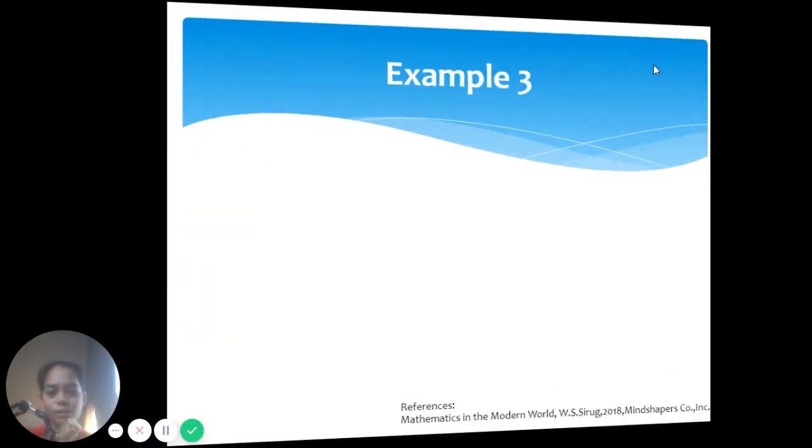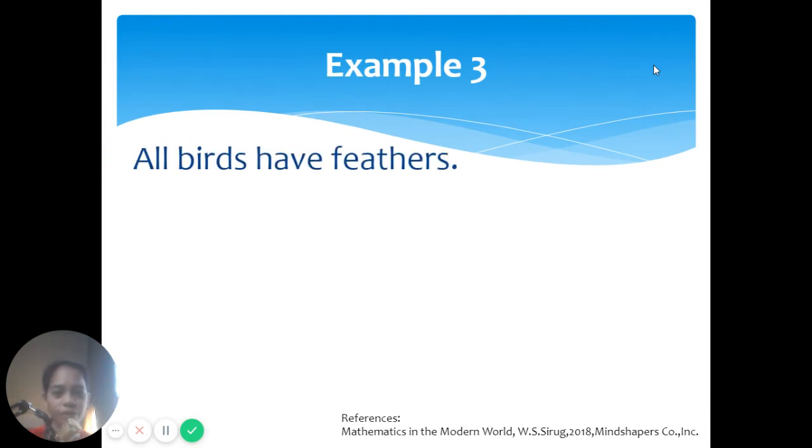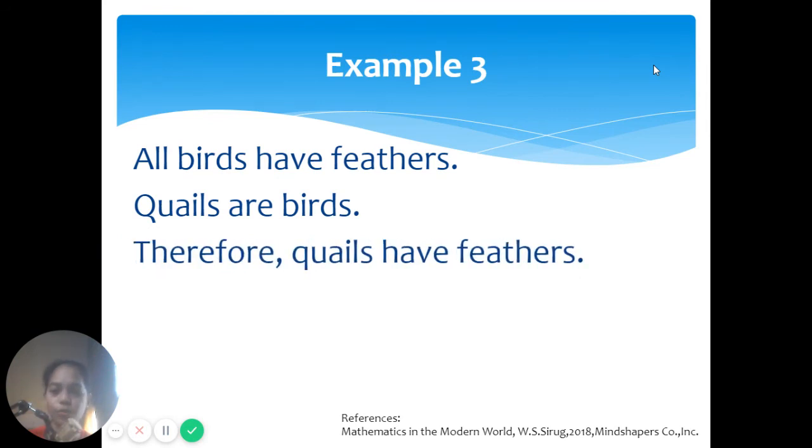For instance, all birds have feathers. So this is a general statement. Then we can have a specific statement after this. Quails are birds. So from here, we can say or we can draw our conclusion, the specific conclusion, as therefore, quails have feathers.